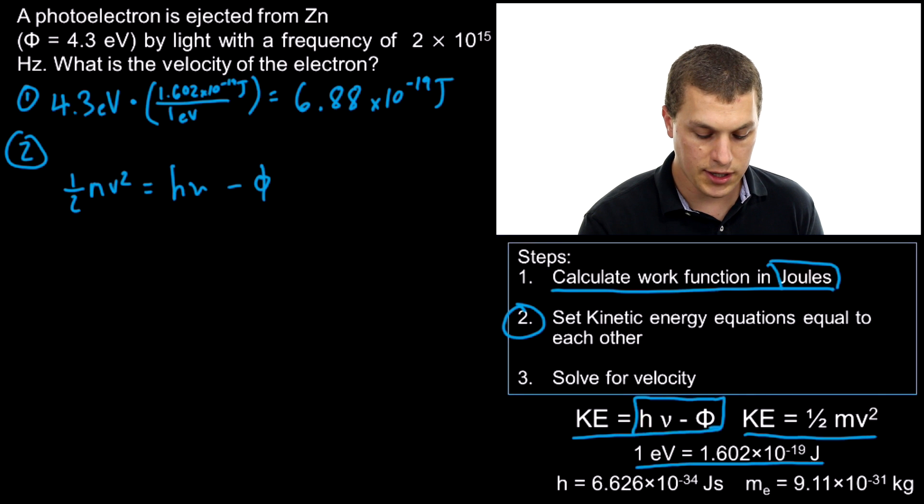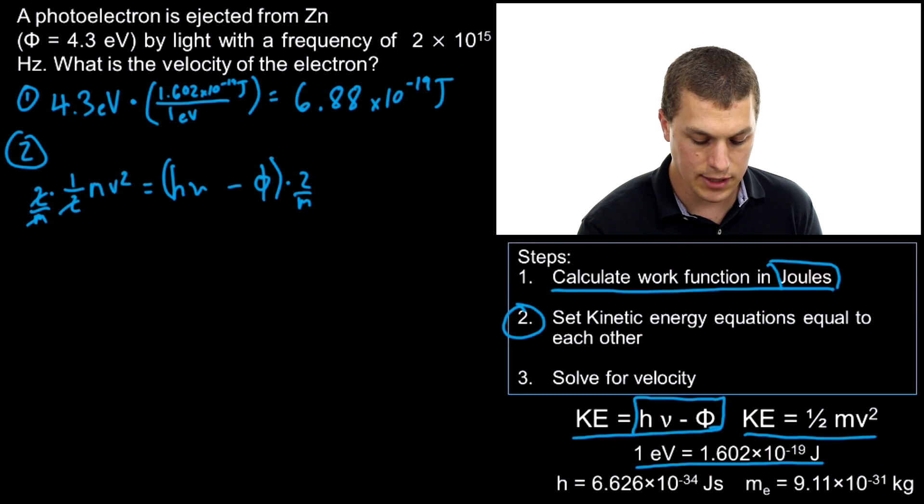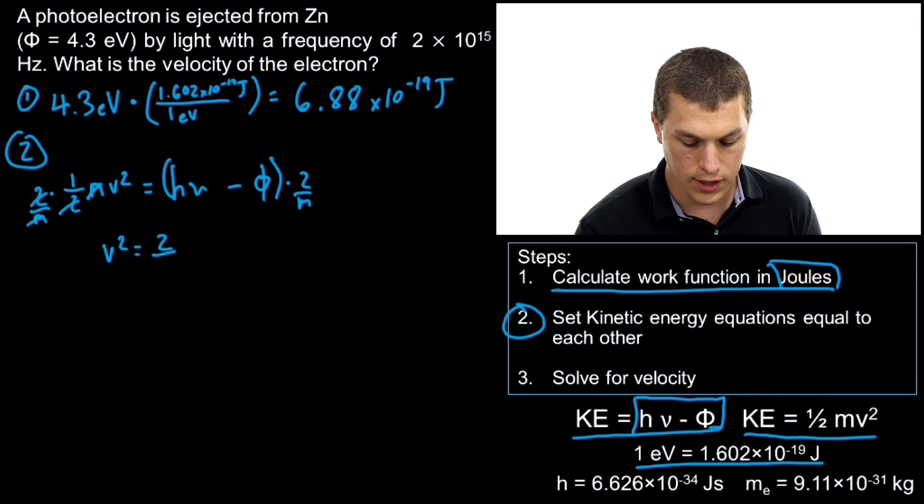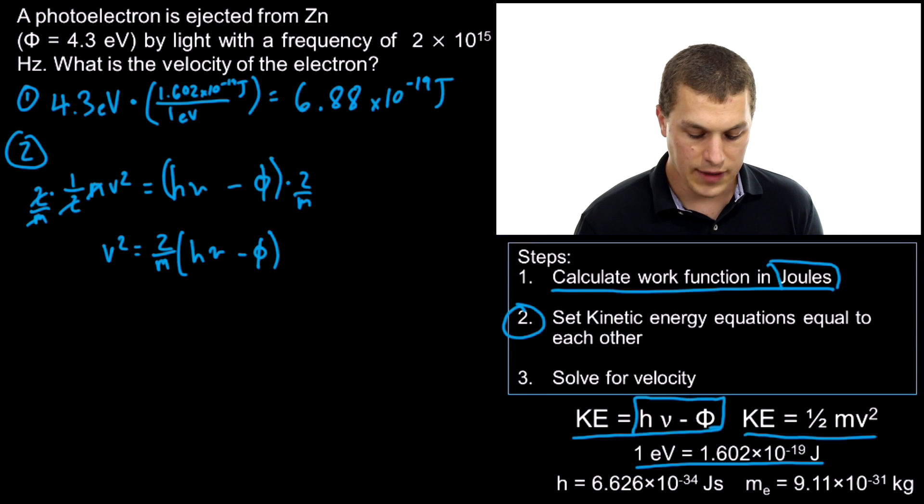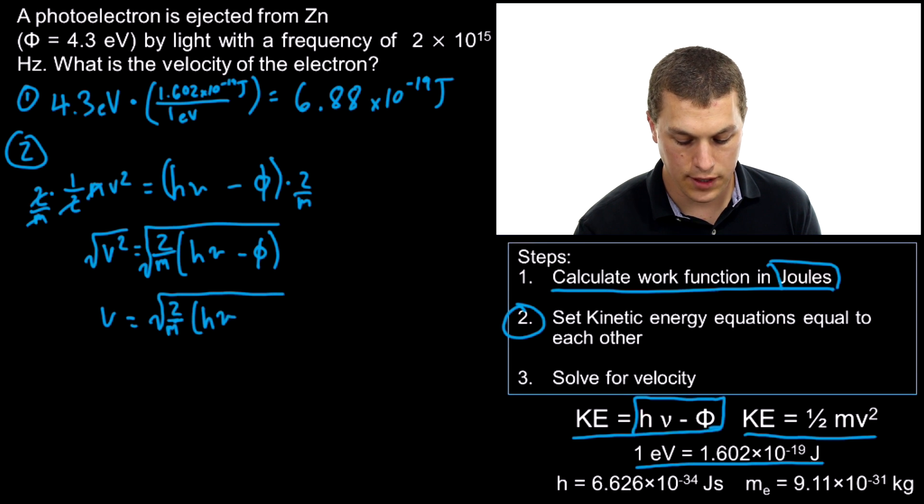I'm going to rearrange that equation now for velocity. We've got to multiply by 2 to get rid of that ½, and we're going to do that to the whole side. Then we also need to divide by m to get rid of that mass. That's going to cancel out our 2 and our m and leave us with v² = (2/m)(hν - Φ). Last thing we've got to do is take the square root of both sides.